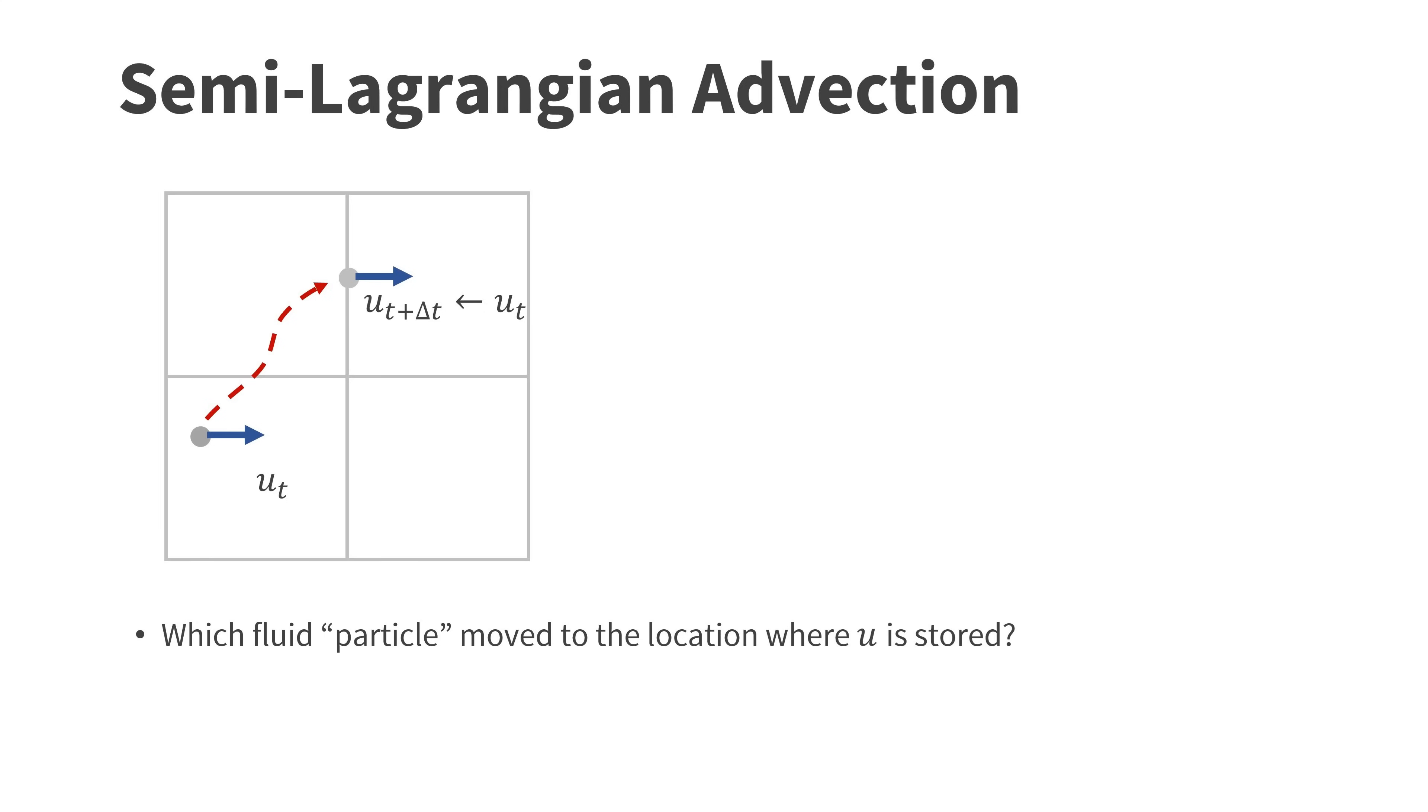To update the horizontal velocity component U of a cell, for instance, we ask which fluid particle moves to the location where U is stored. Then we set the new velocity u_{t+Δt} to the velocity u_t at the previous location. We do not actually work with particles, the moving particle is just an illustration of the idea. This is why the method is called semi-Lagrangian.